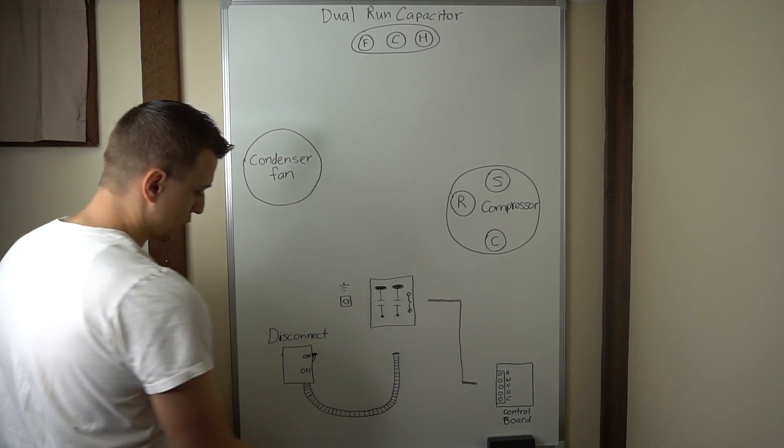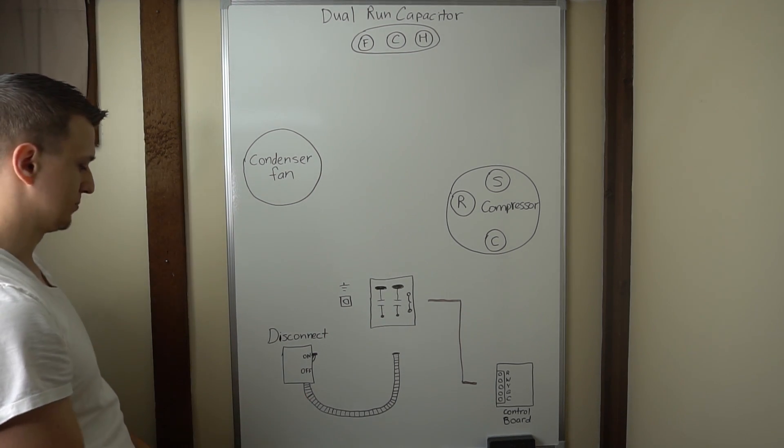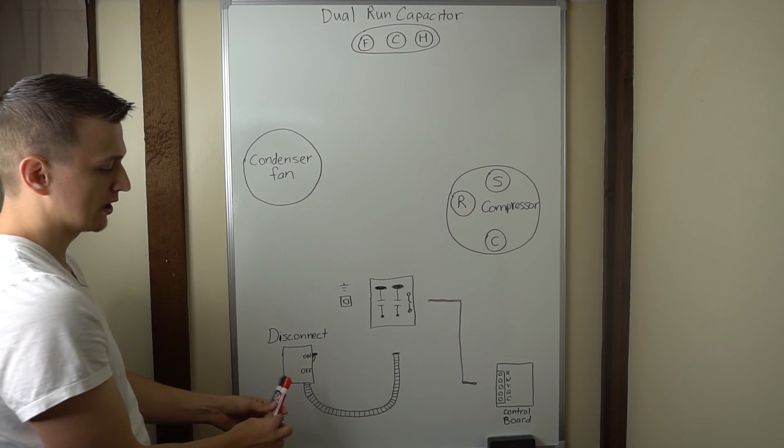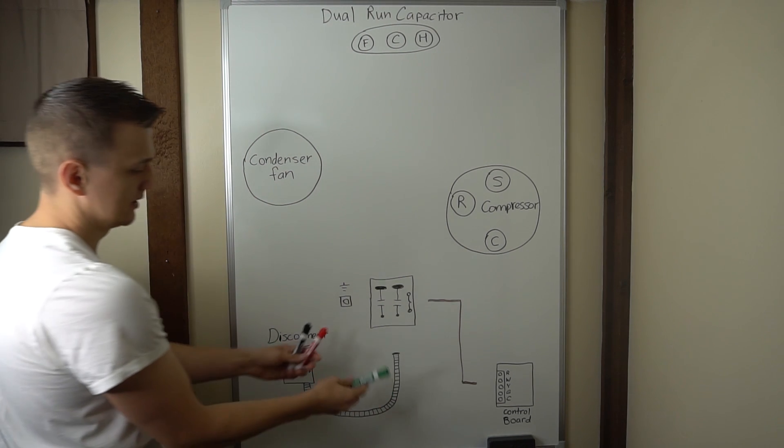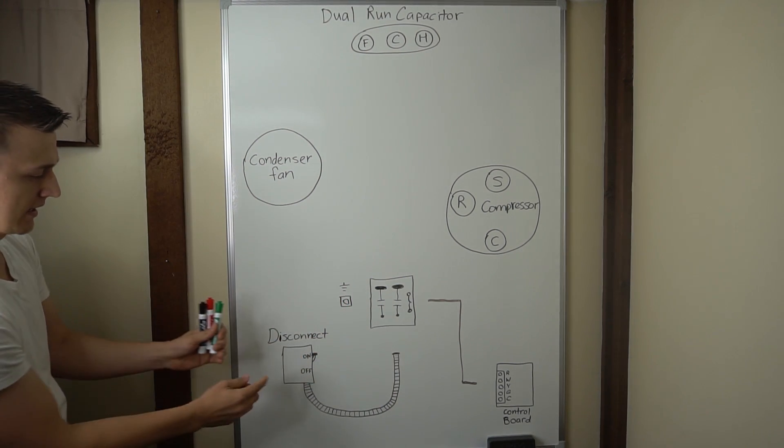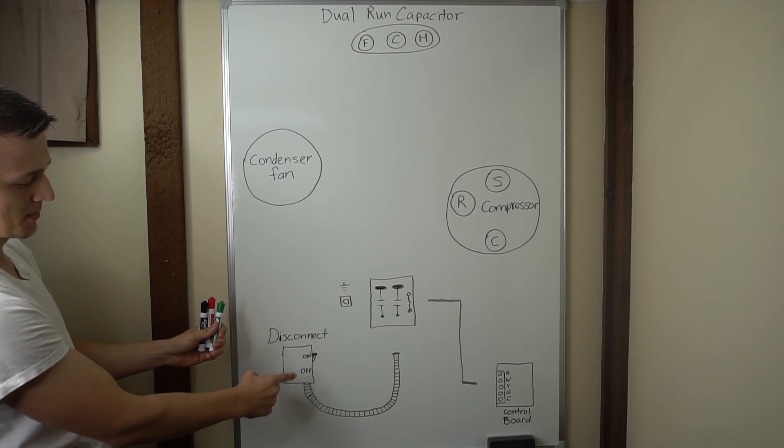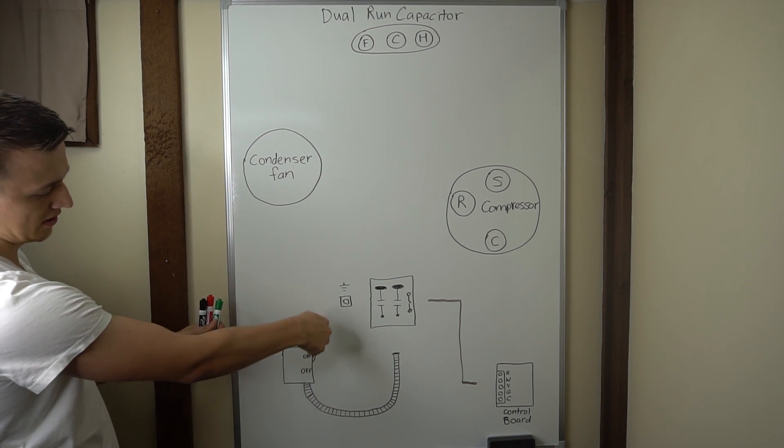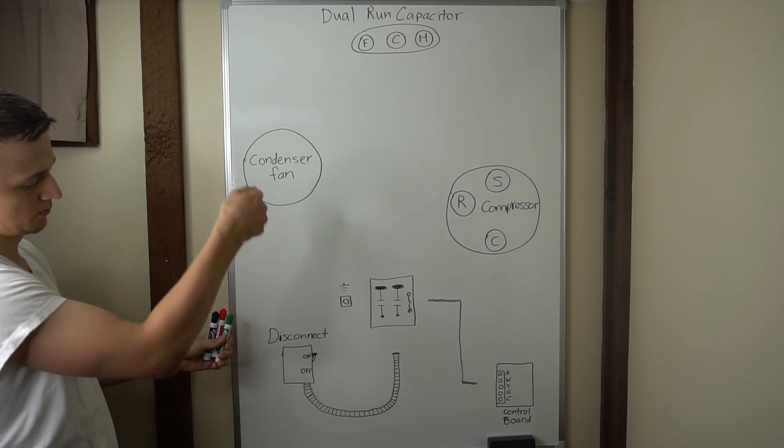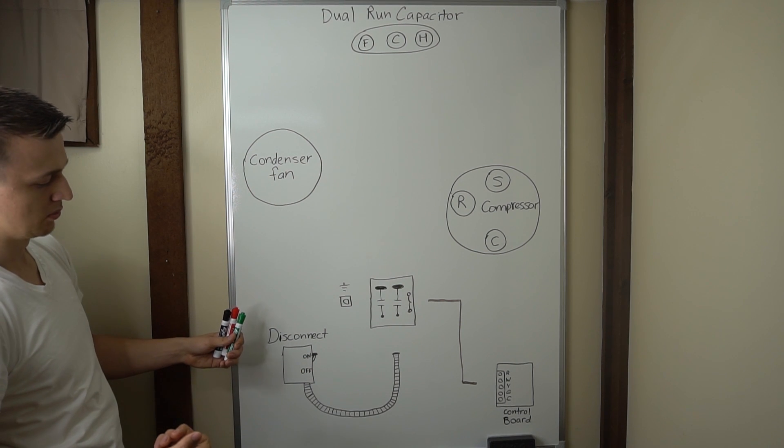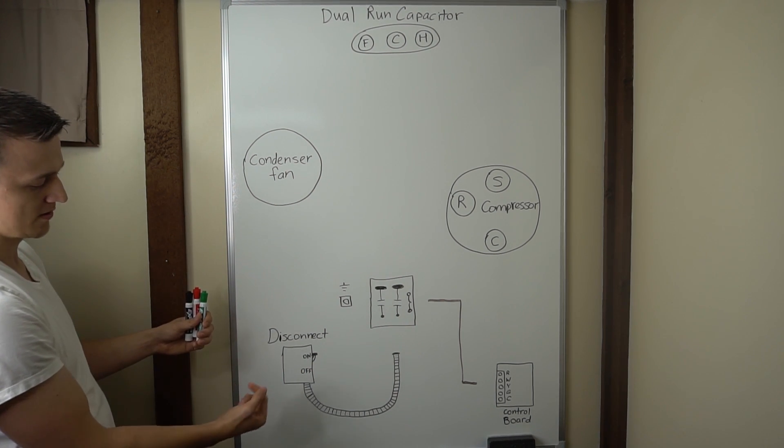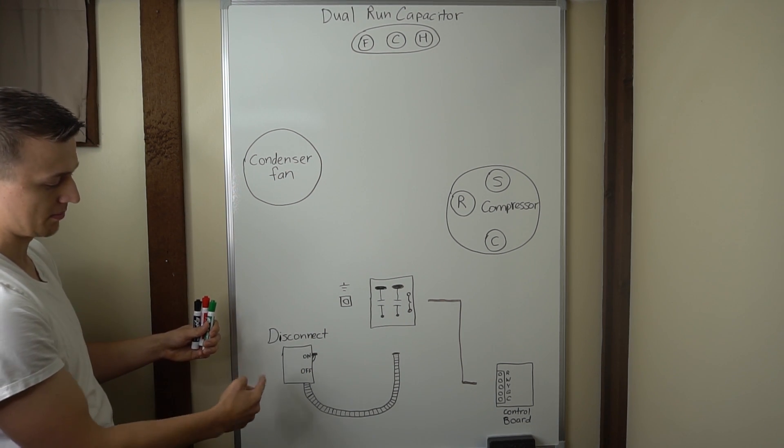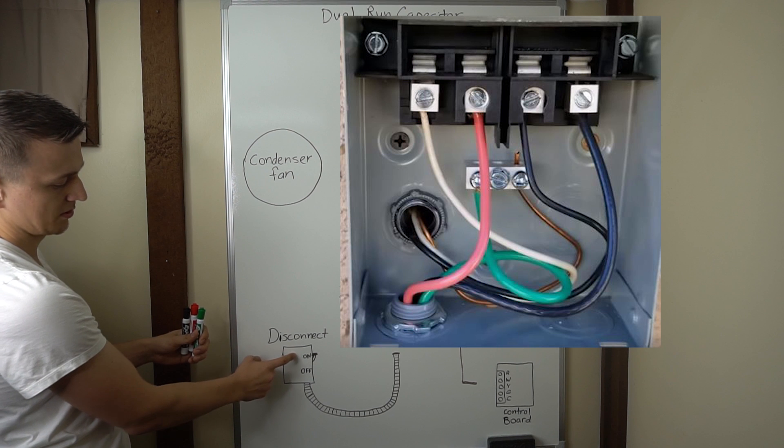Starting with the 240 power supply. A lot of times it'll be a red and a black wire along with the green wire. And you got your disconnect that's probably going to be mounted to the side of the house. It'll either have a breaker, a lever on the side on off, or if you pull it up it might have a plug where you pull the power. But basically you have 240 volts coming from your circuit breaker panel into your disconnect from the house.